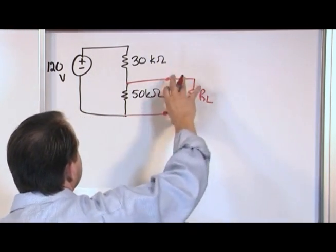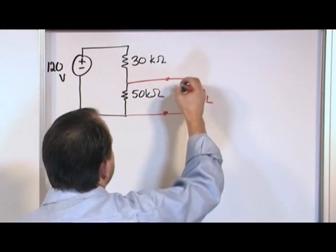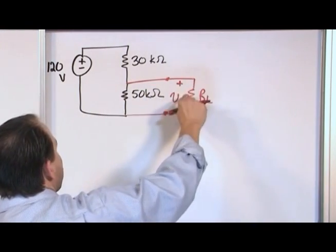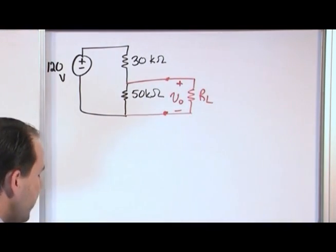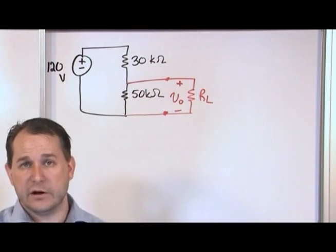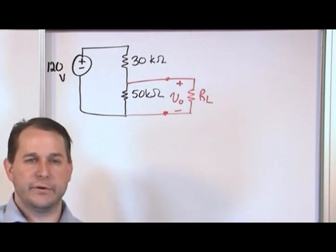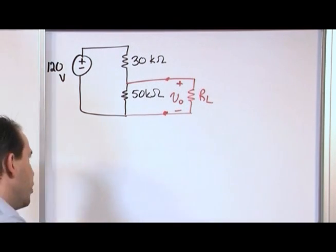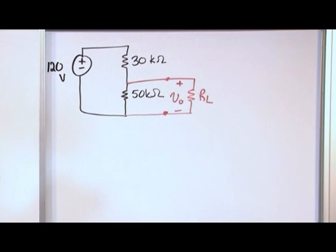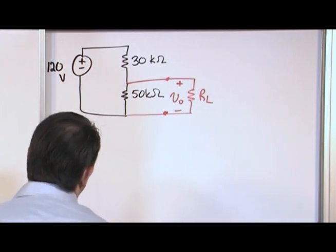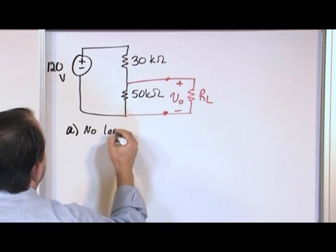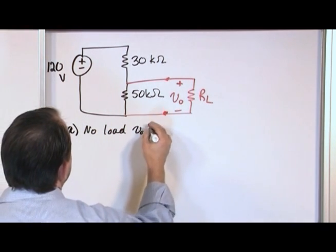And you can draw a little some terminals here if you want. What this basically means is I can detach the load or I can hook up the load or whatever. And so there's some voltage that I'm tapping off, V naught. That's what I want to know. So there's two questions here. What is the no load V naught? What is the no load output voltage? And then the second part is what if I hook up 450 kilo ohms as a load? So let's do the first part first.